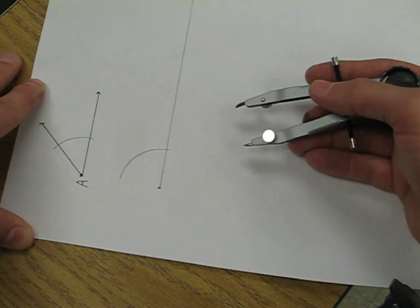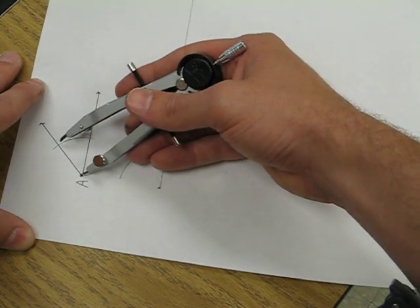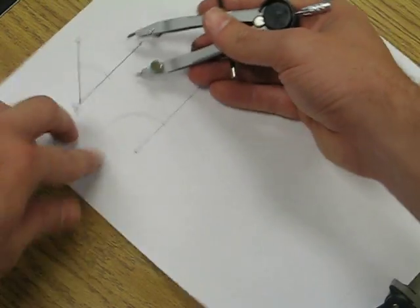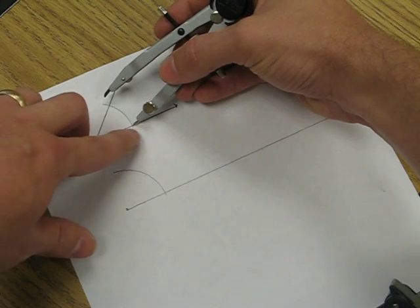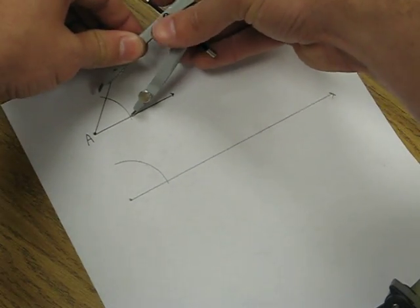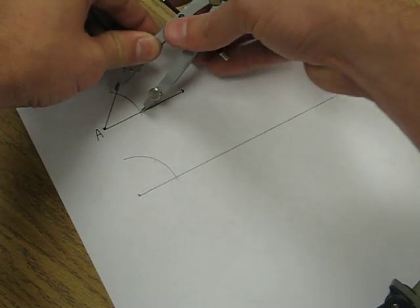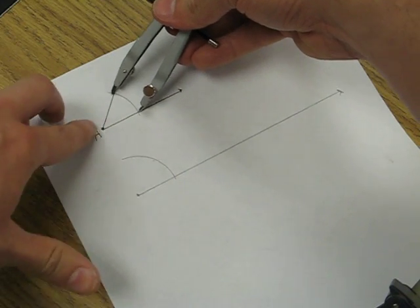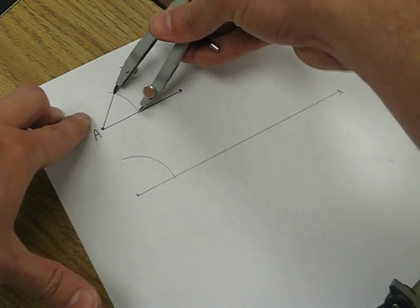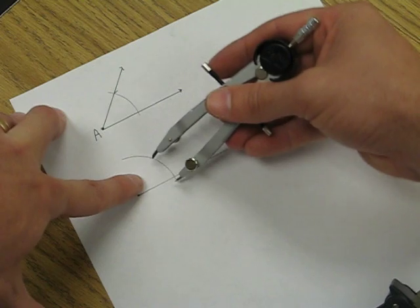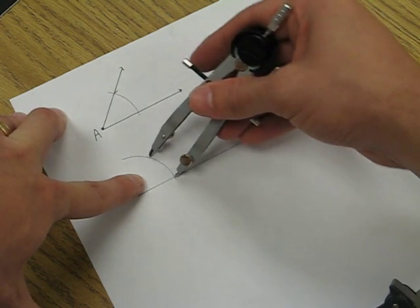The final step would be to measure the arc length with our compass. We need to make this a little smaller so that it matches the arc length between the sides of the angle. And then we can copy that or transfer that down here to our new position.